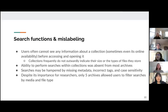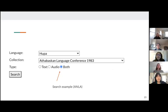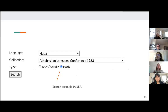Searches are often hampered by missing metadata, incorrect tags, and case sensitivity, which allowed some collections to disappear in certain searches even if they were relevant. Despite its importance for researchers, only five archives allowed users to filter searches by media and file type, which would hamper those looking for specific types of files. Sometimes EAF files were mislabeled as XML files in browsers. The Alaska Native Language Archive did a good job of allowing filtering — it allows the user to filter their search by whether a collection contains text files, audio files, or both.